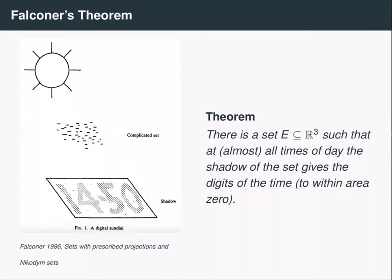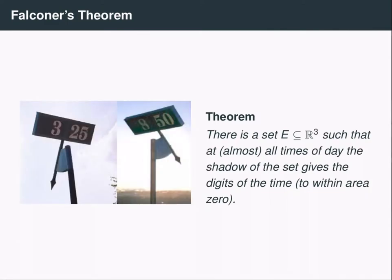This picture is from the original paper by Falconer, and this may seem like a silly example. However, some people inspired by this paper actually went out and tried to construct digital sundials. For example, here's a picture of one that's in a park in Genk, Belgium, that gives the time of day accurate up to every five minutes. You can actually go on the web and find tabletop digital sundials as well if you want to buy something cool for your home.